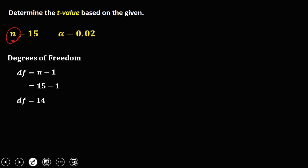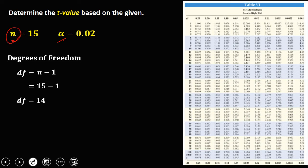We also have the area, that's 0.02. To solve for the t-value based on this given — degrees of freedom is 14, and the area is 0.02 — so therefore the t-value is 2.264.